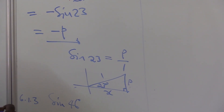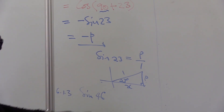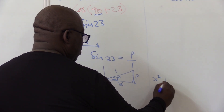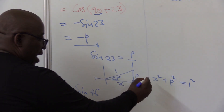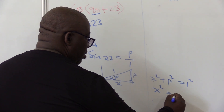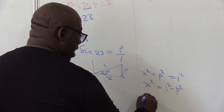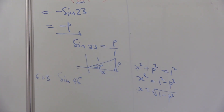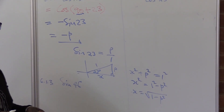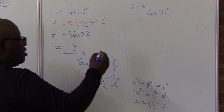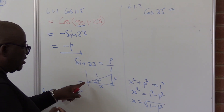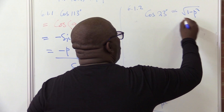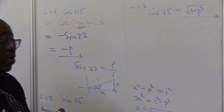We know this side X must be positive. How do we find it? From the theorem of Pythagoras, the square on the hypotenuse equals the sum of the squares on the other two sides. So X squared plus P squared equals 1 squared. Therefore X squared equals 1 minus P squared, and X equals the square root of 1 minus P squared. Cosine is adjacent over hypotenuse, so cosine 23 equals the square root of 1 minus P squared over 1, which is exactly that.